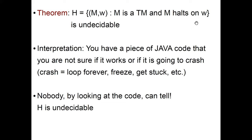Let us first consider the language H, which is defined to be the language of pairs M and W, where M is a Turing machine and M halts on W — so either accepts or rejects, but does not go on forever. We claim that H is also undecidable.